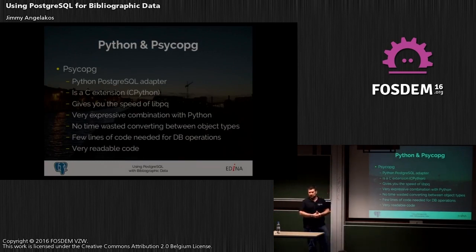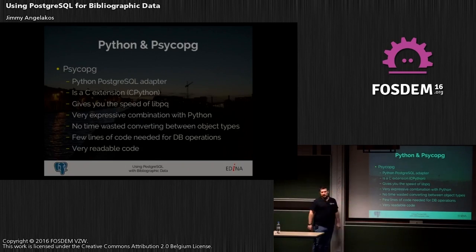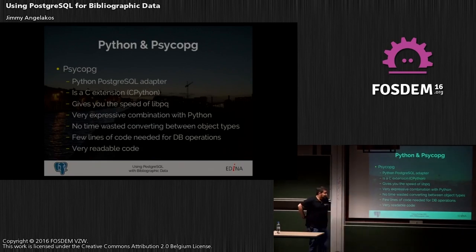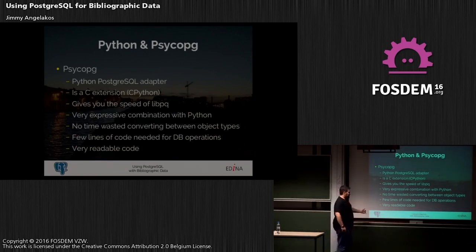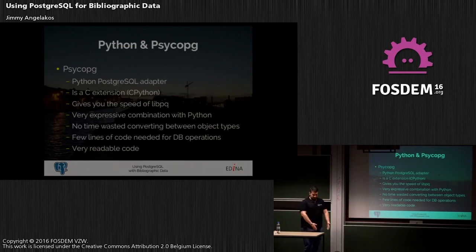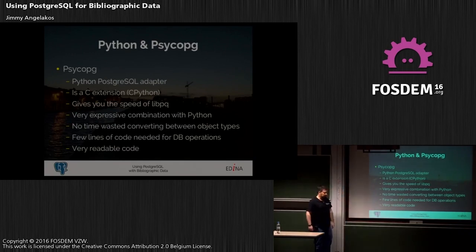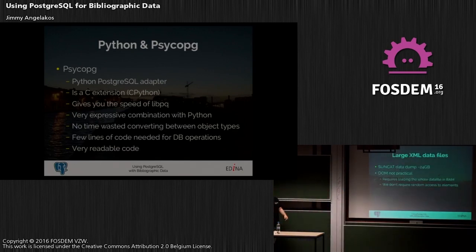Let's look at what I used for this experiment. Why not use psycopg2? It's very easy to program for Postgres and in Python. It's very fast because it's based on CPython, giving you speed comparable to libpq when writing in C. It's a very expressive combination — it lets you type something that looks reasonable, like English, and not JDBC code. You don't waste your time converting between object types because it supports Postgres data types as closely as possible as Python data types. You need very few lines of code, as we'll see in examples later on, and it's very readable code.